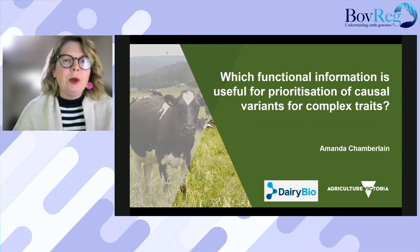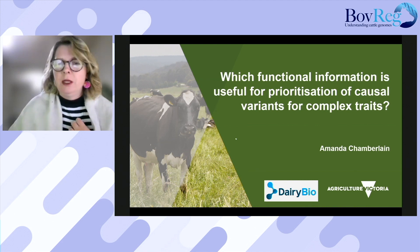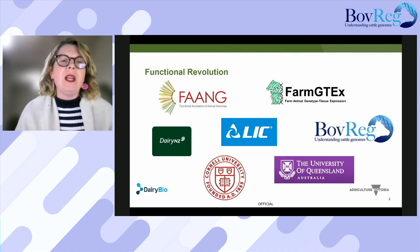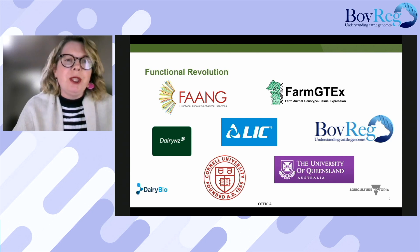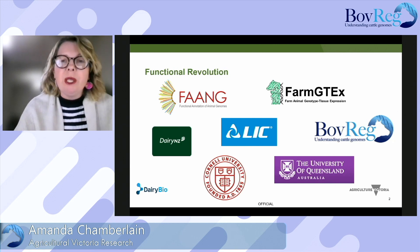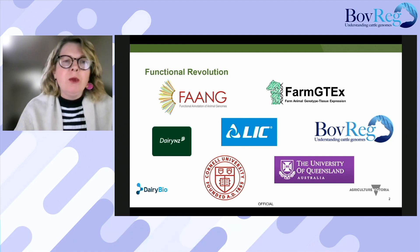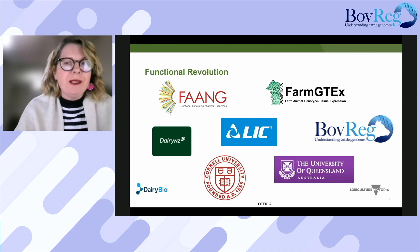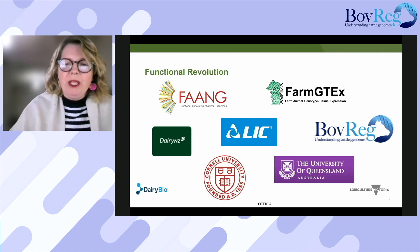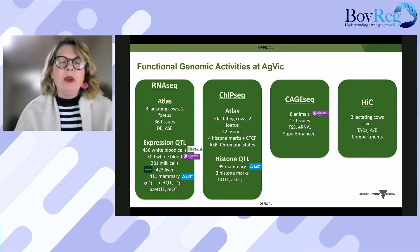I wanted to talk about the functional information we've used to prioritise causal variants for complex traits. We've used functional information to develop a custom SNP chip and established that it has improved the genomic predictions for milk production traits in Australia. Since we developed that chip, there's been what I'm calling a functional revolution, and we've got much more data that's become available.